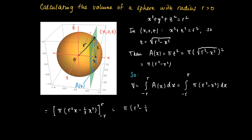So as a result, we get pi times r to the power 3 minus 1 third r to the power 3 by substitution of r, minus pi times the same expression where we substitute minus r. So we get minus r to the power 3 minus minus 1 over 3 r to the power 3. And we add those numbers up, we get 4 over 3 pi r to the power 3.